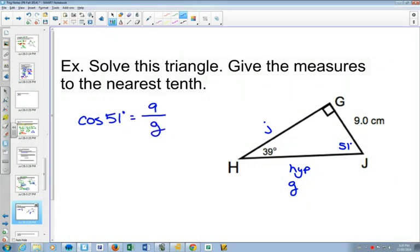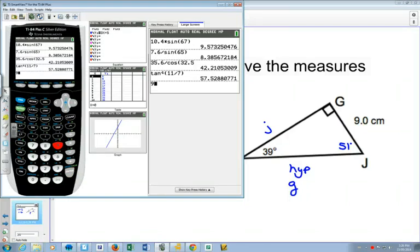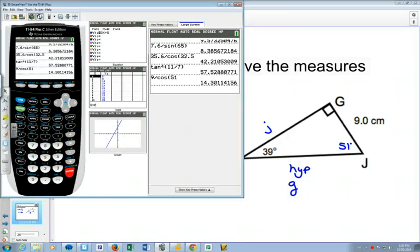Let's multiply both sides by g and divide by cos of 51 all in one step. This would be this part where those things just switch: 9 over cos of 51 degrees. Go to your calculator. 9 divided by cos of 51, and you get the same answer that someone else would have got.